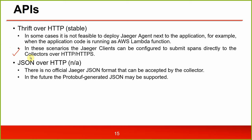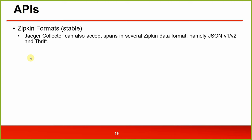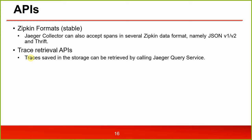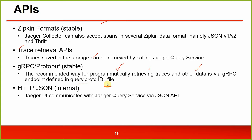JSON over HTTP - there is no official Jaeger JSON format that can be accepted by the collector. In the future, proto buffer-generated JSON may be supported. Zipkin format is stable - Jaeger collector can also accept spans in several Zipkin data formats: JSON v1, v2, and Thrift. Traces saved in storage can be retrieved by calling Jaeger query service. gRPC proto buffer is stable and is the recommended way for programmatically retrieving traces and other data, defined in the query.proto IDL file. HTTP JSON is internal - Jaeger UI communicates with Jaeger query service via JSON API.